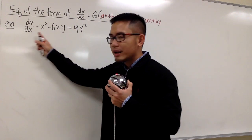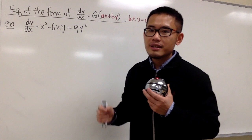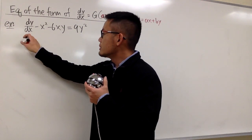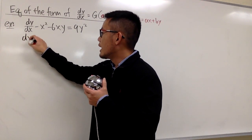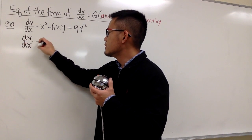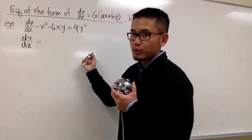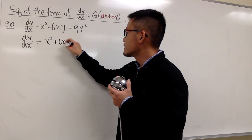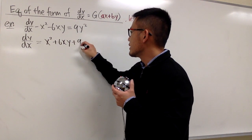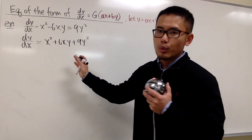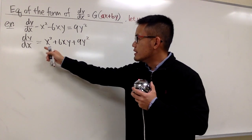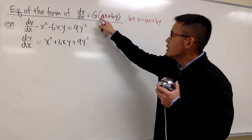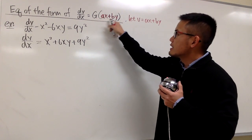As you can see in this equation, the dy/dx is not isolated yet, so let's do that first. Putting dy/dx on the left-hand side, we have positive x² + 6xy + 9y² on the right-hand side. However, this is not quite in the form of a function in terms of ax + by yet.